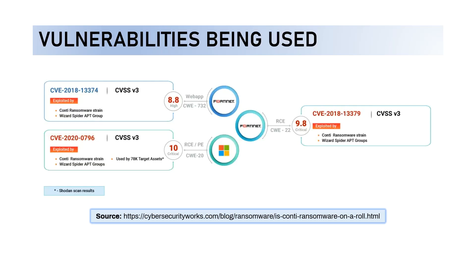Conti is actually using three different vulnerabilities: CVE-2018-13374, CVE-2018-13379, and CVE-2020-0796. The two CVE-2018 vulnerabilities are related to Fortigate, and CVE-2020-0796 affects Windows. They are utilizing high to critical severity vulnerabilities to achieve their goals.